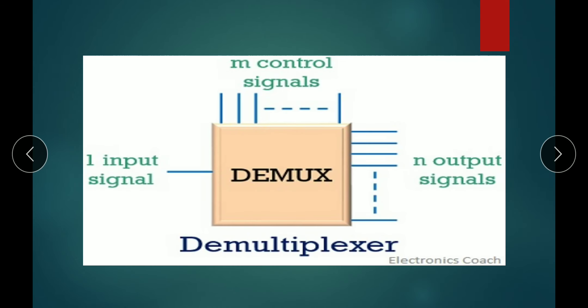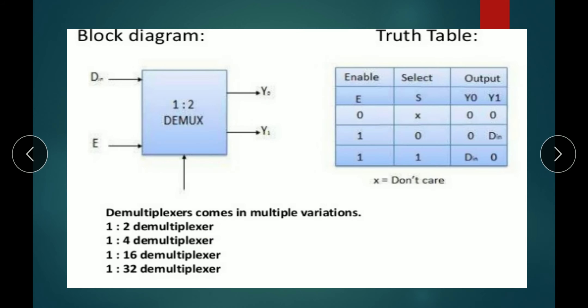Data input is transmitted to only one of the outputs as determined by the select lines. In other words, a demultiplexer takes one data input source and selectively distributes it to one of n output channels. This is the DEMUX block diagram — one input, m control signals, and n number of outputs.